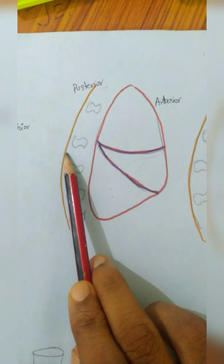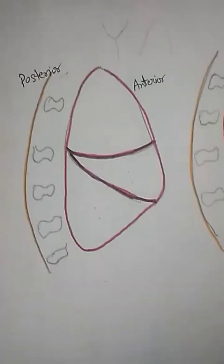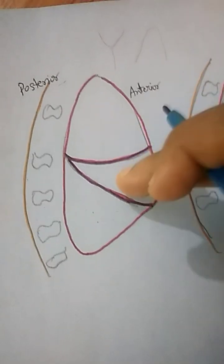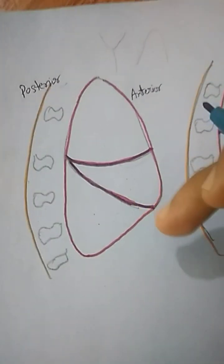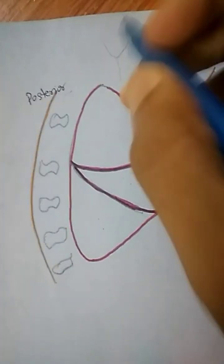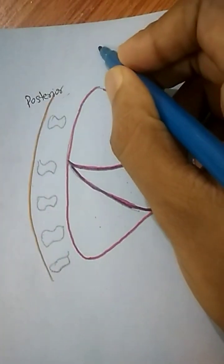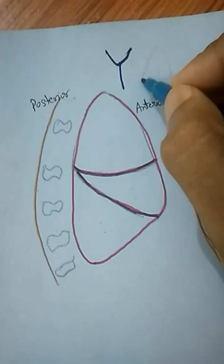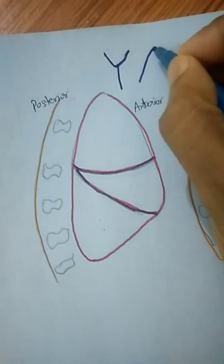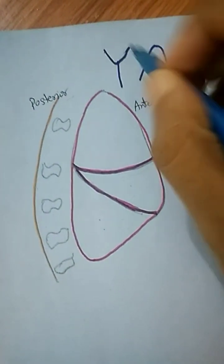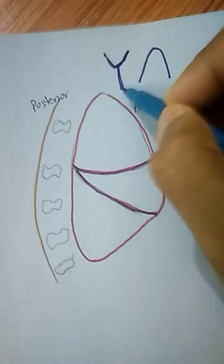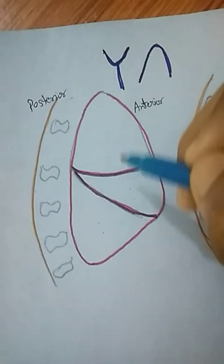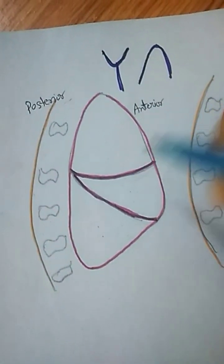This is anterior and this is the posterior portion. We can divide the different lobes into different segments by drawing just some Y shapes and mountains. By drawing Ys and some mountains, we can easily divide these lobes into different segments.